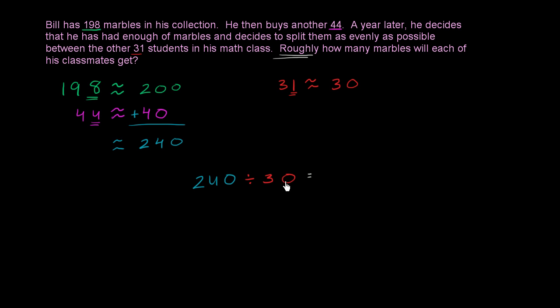If we say that this is equal to the marbles per student, so let's say that this is m, m for marbles per student. This is another way of saying that m times 30 is equal to 240, or that 240 is equal to m times 30.